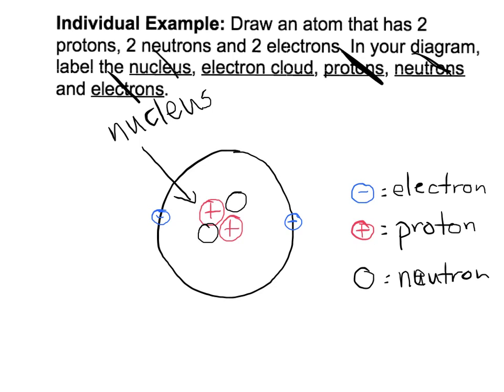The last one is the electron cloud. The electron cloud is the outer shell of my picture. So it's this circular area on the outside that has the two electrons floating around on it. And that's the electron cloud.